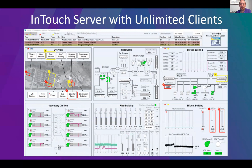Here you can see an example of an InTouch application leveraging the Situational Awareness library. A lot of the elements are grayscale, but color is used sparingly to draw the operator's attention to things like abnormal situations, alarms, or items that are on or running — limiting color where things are running normal. There are trend pens on the bottom left-hand side for an overview of what's going on in your environment, both in real time and in a historical trend, alerting the operator's attention to what matters most.